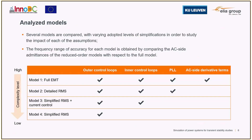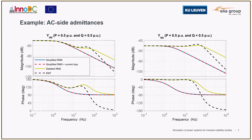Based on these simplifications, several VSC models were implemented and compared to understand the impact of each assumption. The frequency range of accuracy of each model was determined by comparing the AC side admittance with respect to the full model. We see a table showing all the models: the most detailed is the full EMT with no simplifications. After that, we have the models using transient stability programs, also called RMS models. The most detailed of them, Model 2 (detailed RMS), includes all control details, and the least detailed, Model 4 (simplified RMS), only includes the outer-loop controls.